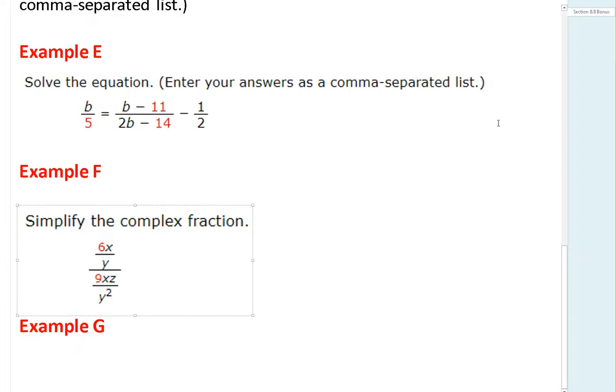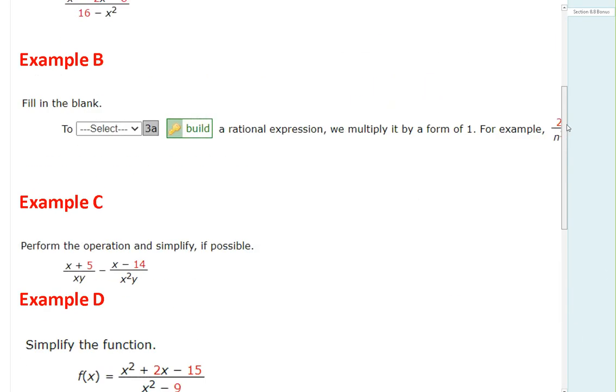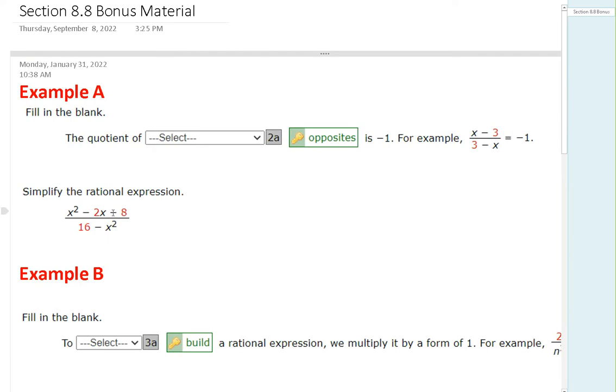A couple of first things I'm going to do is just give away some points here for you. So one of the questions here says the quotient of blank is negative 1. For example, x minus 3 over 3 minus x equals negative 1. So the answer there is opposites.